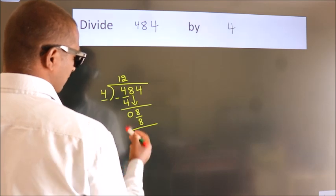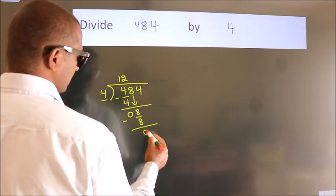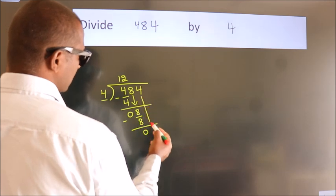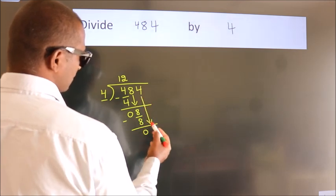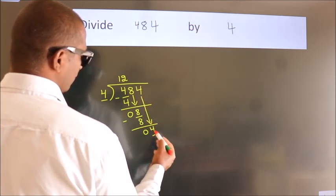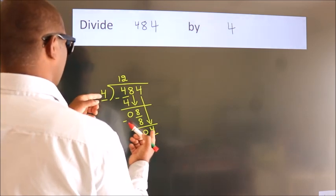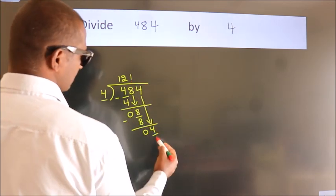Now we subtract. We get 0. After this, bring down the beside number. So, 4 down. When do we get 4? In 4 table. 4 once, 4.